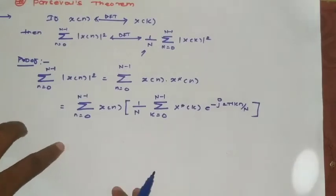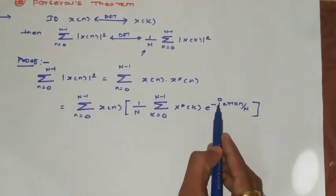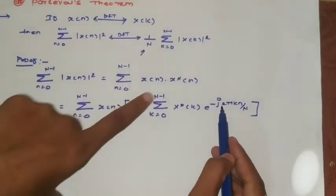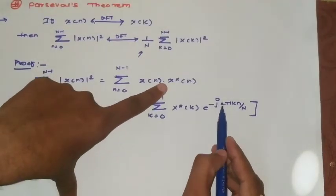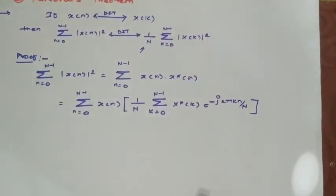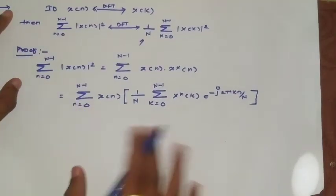You may ask: in IDFT we have e^(+j). Yes, but we are taking the complex conjugate, so minus j becomes plus j. We've reduced one step. Now we rearrange the terms.